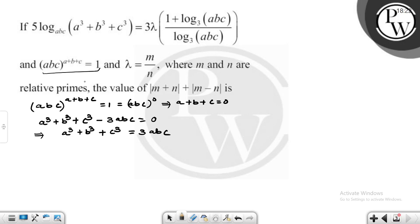Now we need to do this. What do we do here? We have the a³ + b³ + c³ value. Therefore, 5 log_abc equals 3 times λ.